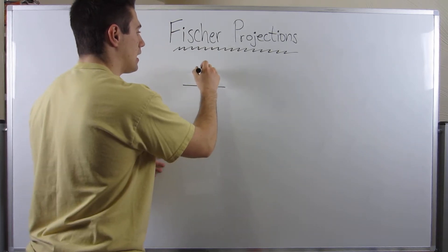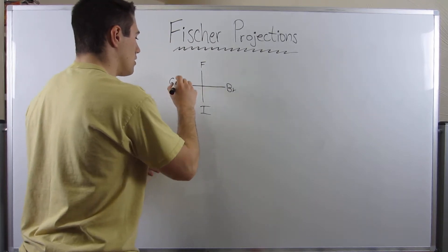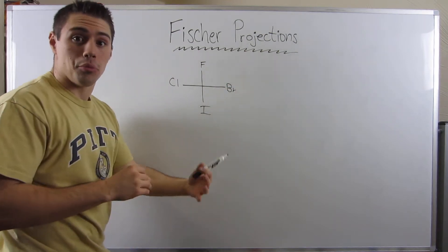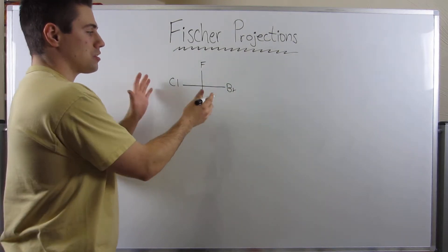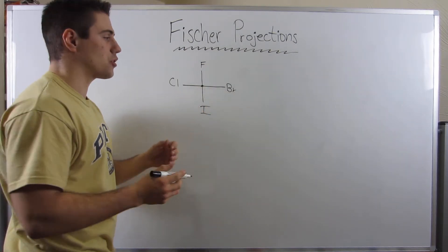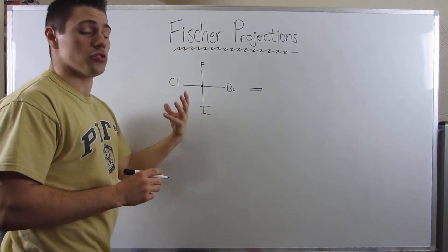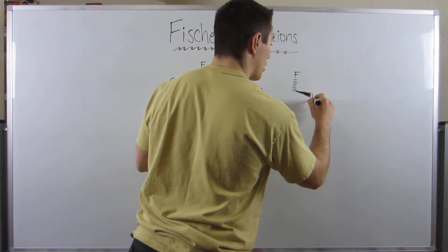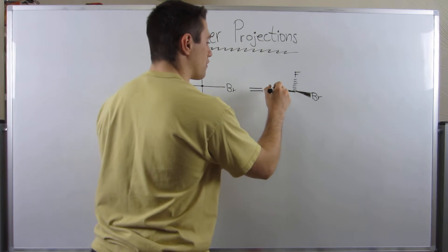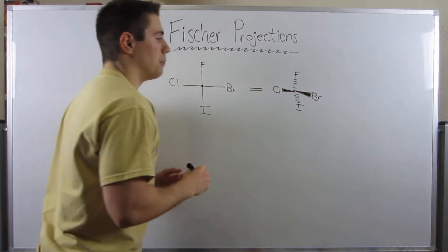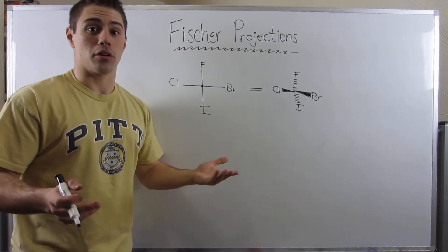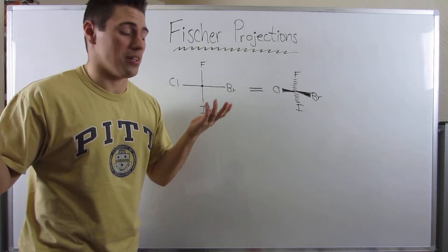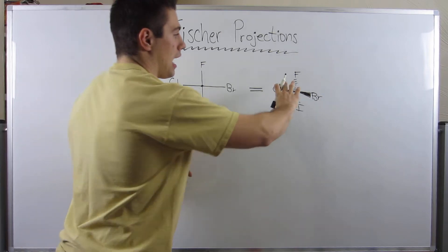Here's a one-carbon Fischer Projection. In a Fischer Projection, there are no wedges or dashes — but they're kind of implied. We draw it flat on a page. What's kind of weird is that the sides are coming at you while the top and bottom are coming away from you. A professor I TA'd for, Dr. Erica Houston for OCHEM 1, always said in Fischer Projections the sides are arms coming out to hug you. So just know that these sides are wedges — they're coming at you — and the top and bottom are coming away from you.